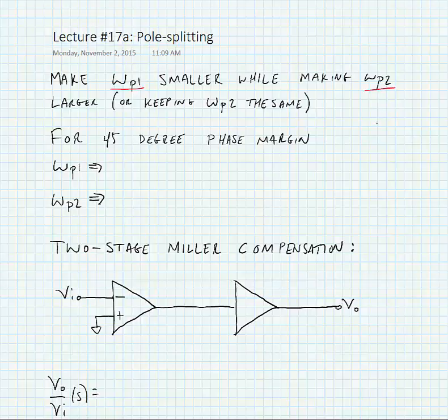For a 45 degree phase margin, what we want is for the open-loop response to have omega_p1 equal to our 3dB frequency and omega_p2 is going to be equal to our omega closed loop frequency.